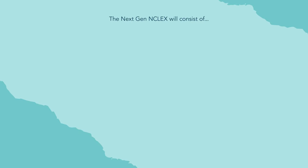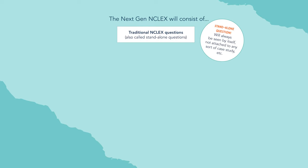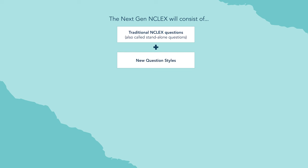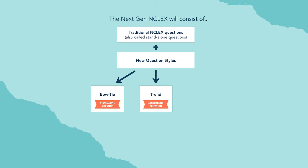Let's look at a chart which breaks down all the questions on the new-generation NCLEX. The old NCLEX solely consisted of standalone questions — typical questions like select-all-that-apply, multiple choice, and hotspot questions. The next-gen NCLEX still has those standalone question types; however, they're introducing more question styles. These two new standalone questions are called bowties and trend questions.